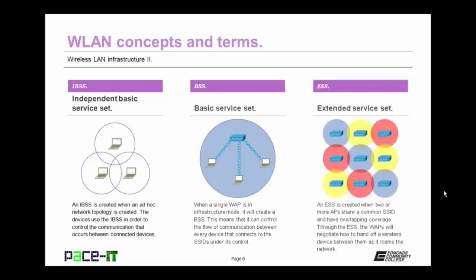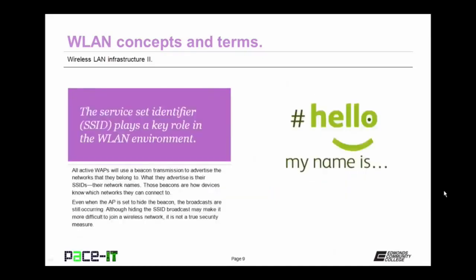Then there's the ESS, or Extended Service Set. An ESS is created when two or more access points share a common SSID and have overlapping coverage. Through the Extended Service Set, the WAPs will negotiate how to hand off a wireless device between them as it roams the network. I mentioned the Service Set Identifier, or the SSID, just a moment ago. It plays a key role in the wireless local area network environment. All active wireless access points will use a beacon transmission to advertise the networks that they belong to — their SSID, which can be thought of as their network name.